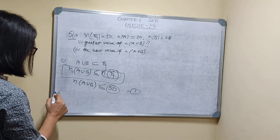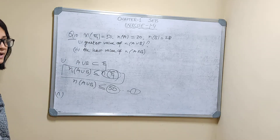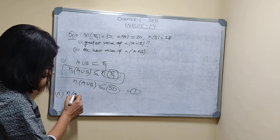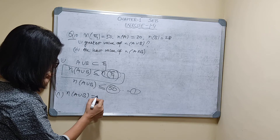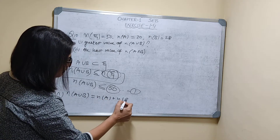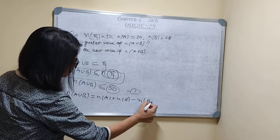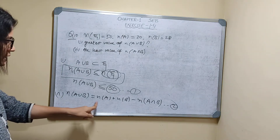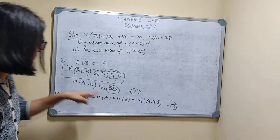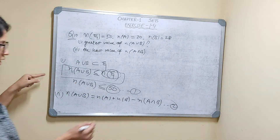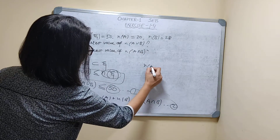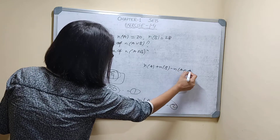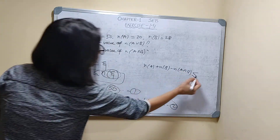Now part two: what is the least value of N(A∩B)? I know the formula: N(A∪B) = N(A) + N(B) − N(A∩B). Substituting this expression for N(A∪B) into equation one, I get N(A) + N(B) − N(A∩B) ≤ 50.